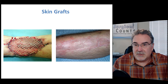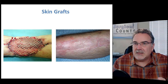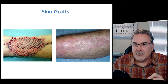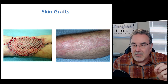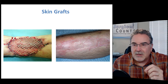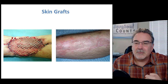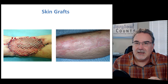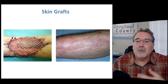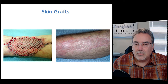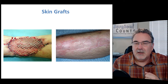The disadvantage is that it doesn't always look as nice as a full thickness skin graft would. You can see the meshing — those little lines still remain as scar tissue in the skin. But at least the wound is covered, and for extensive wounds this is an efficient way of using skin grafts.